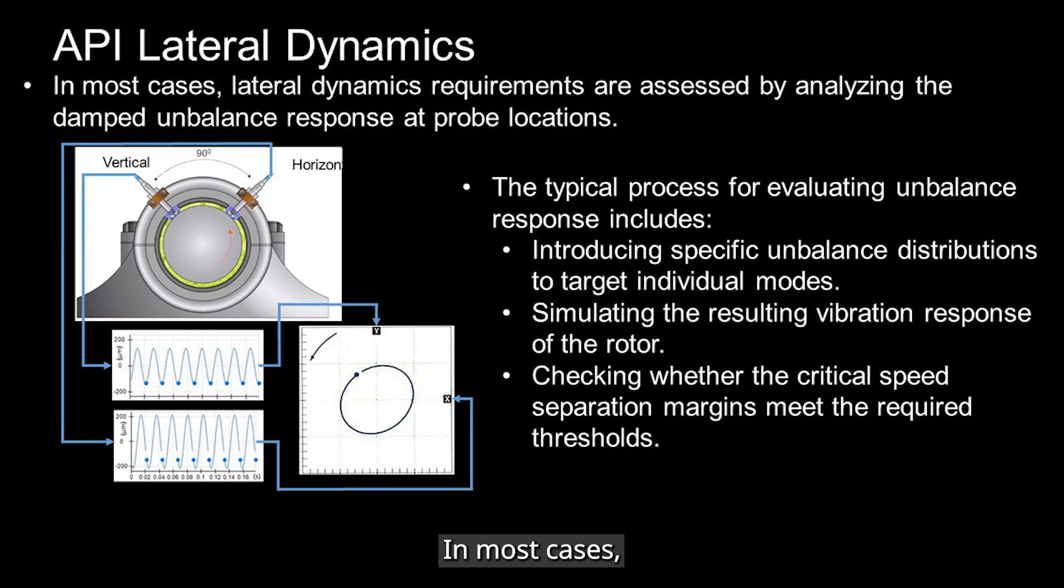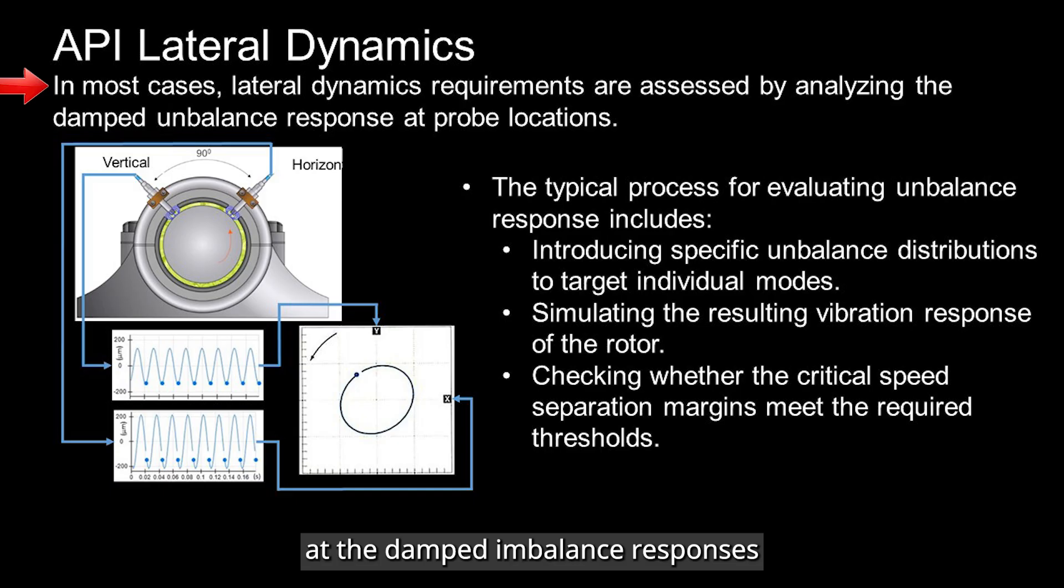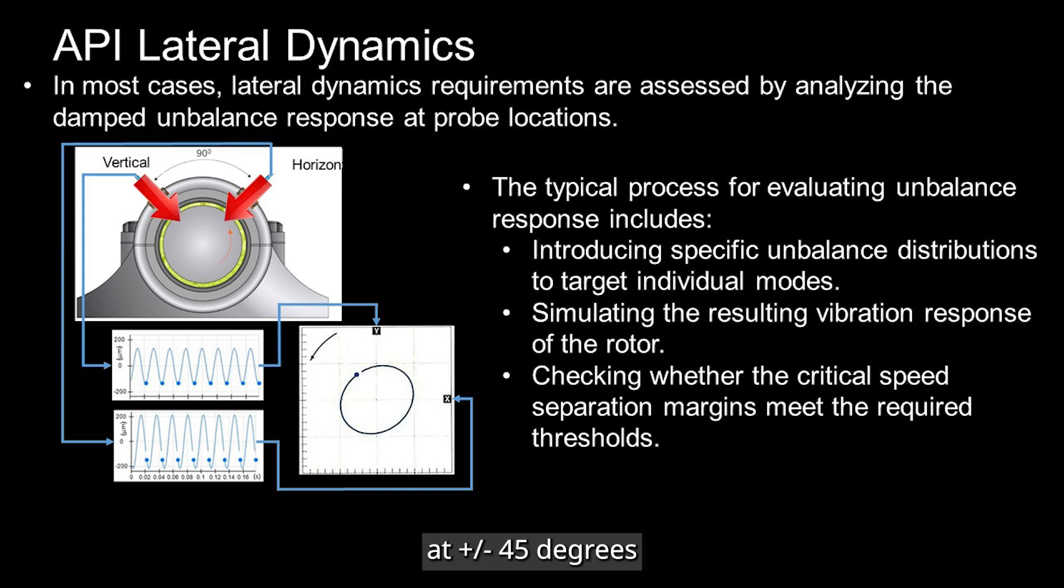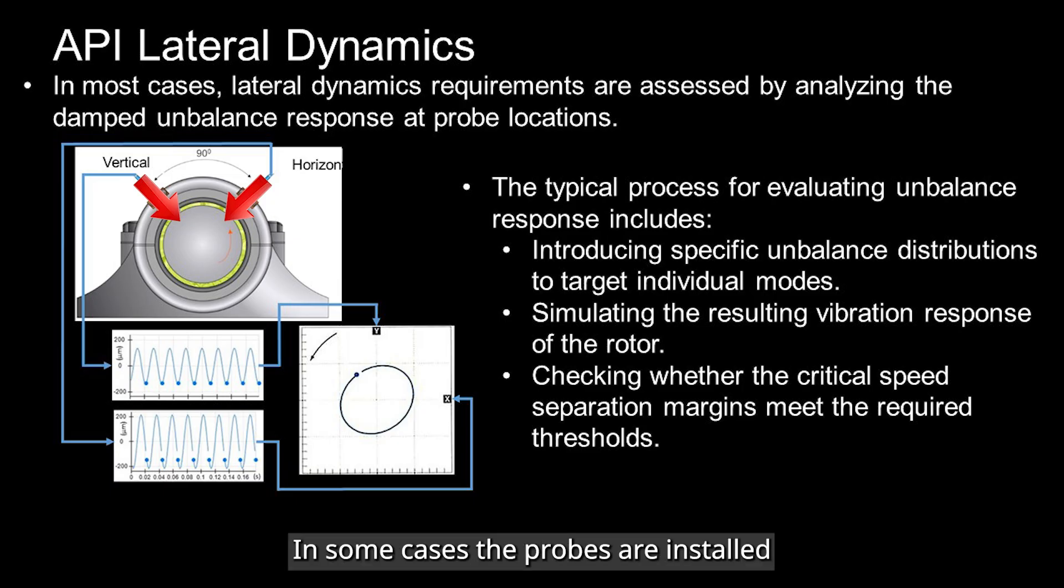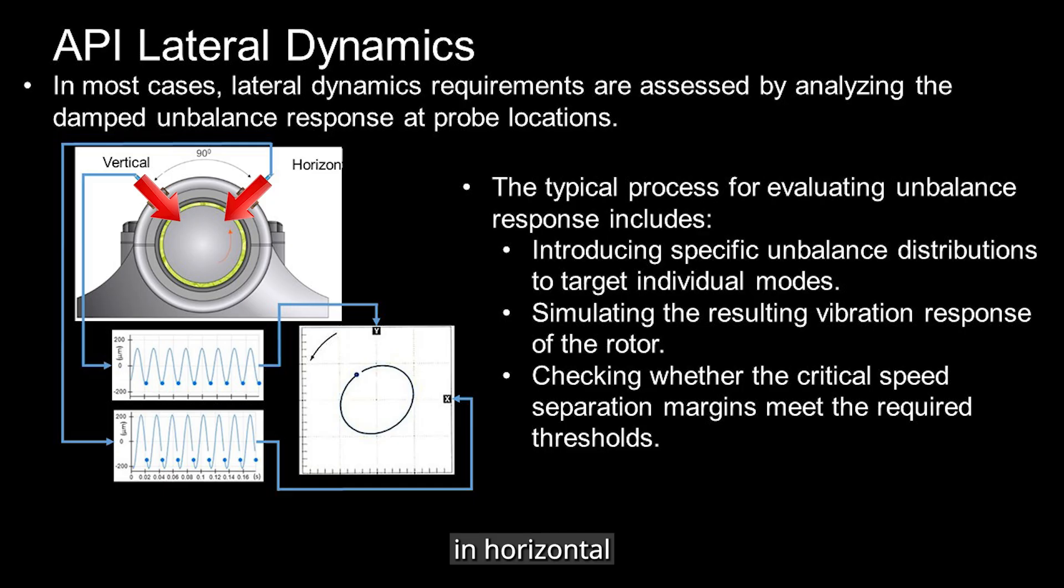In most cases, lateral dynamics requirements are evaluated by looking at the damped imbalance responses at probe locations. In many setups, displacement probes are positioned at ±45 degrees from the top of the machine, as shown in this figure. However, in some cases, the probes are installed in horizontal and vertical orientations instead.